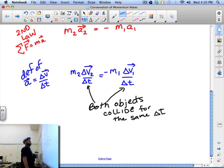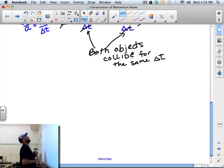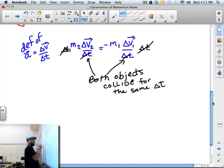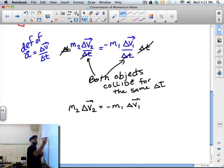Now, both objects collide for the same delta t. So we can leave that out of our equation because it will cancel out. Simply multiply both sides by delta t and it's gone. So when the dust settles, we have m2 Δv2 has to equal negative m1 Δv1.